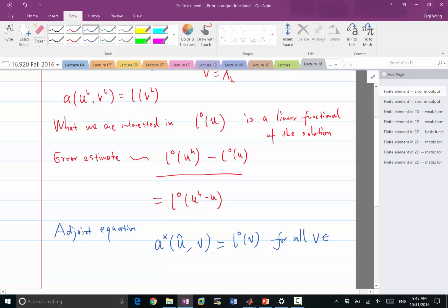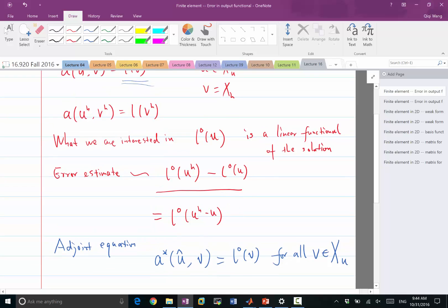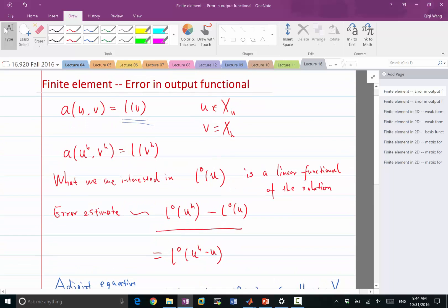Remember, this Lo has to be operated on the difference between U_H and U. So this V in this differential equation should belong to the space of X_U. That's the space where U has to belong to. So the test space of this adjoint equation is the primal space, is the space of, is the solution space, the also-called trial space of the original differential equation.